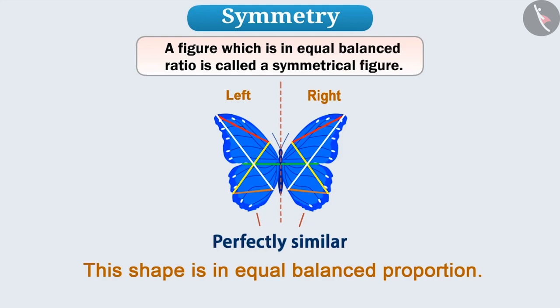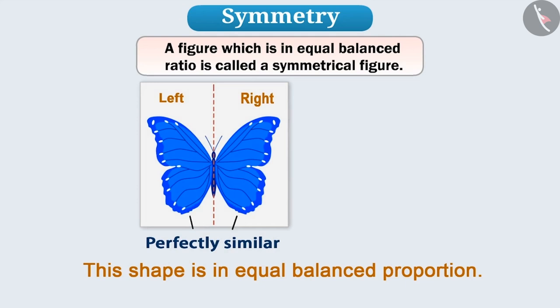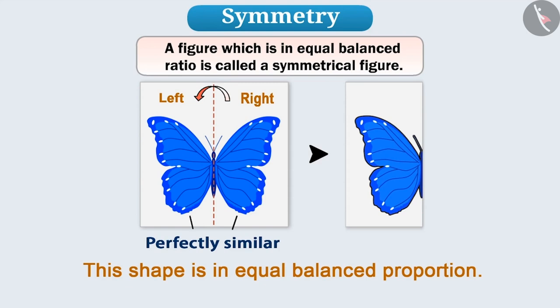Ordinarily, if we can bend a shape into two parts which cover each other completely, that is, the reflection of each other, then we can say that the shape is symmetrical.